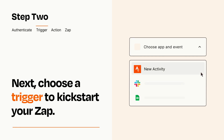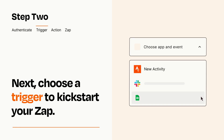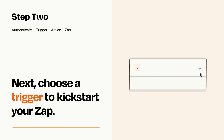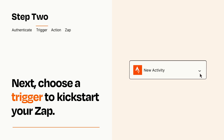Now let's set up your trigger, which is the event that starts your Zap. Pick the trigger event that you want from the list. When you set up this step, your Zap will pull in test data from your trigger app that you'll see later when setting up your action app.